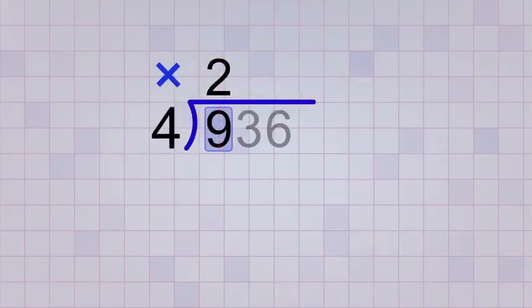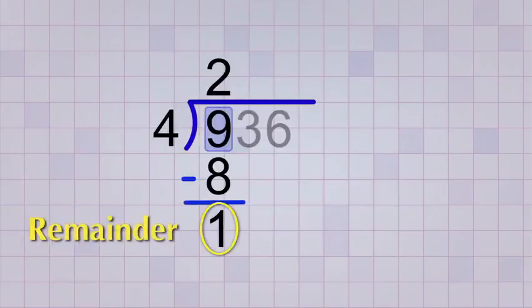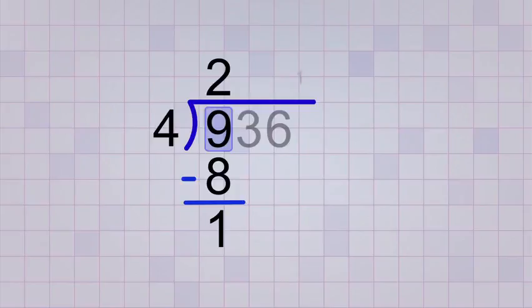Ok, now we multiply. 2 times 4 is 8, and the 8 goes below the 9 so that we can subtract to get our remainder. 9 minus 8 is 1, so our remainder is 1. Now at this point, in our basic one-step division problems, we would rewrite our remainder up in our answer with a little r next to it. But we aren't going to do that yet because this is long division and we still have more digits to divide, the ones we've been ignoring.